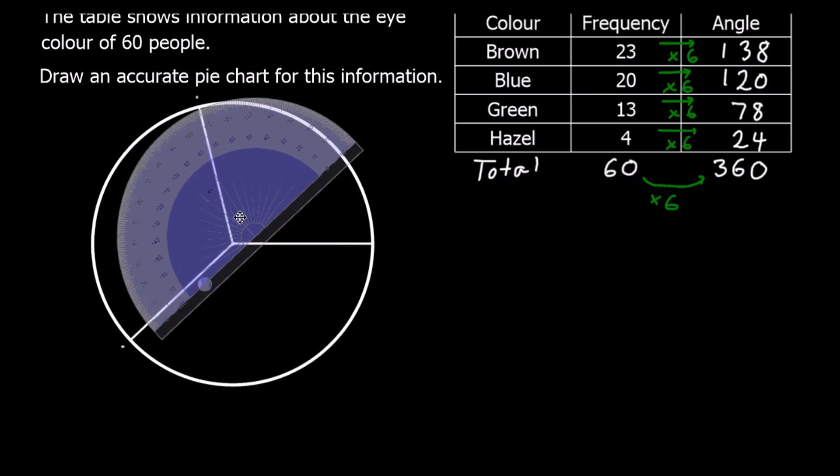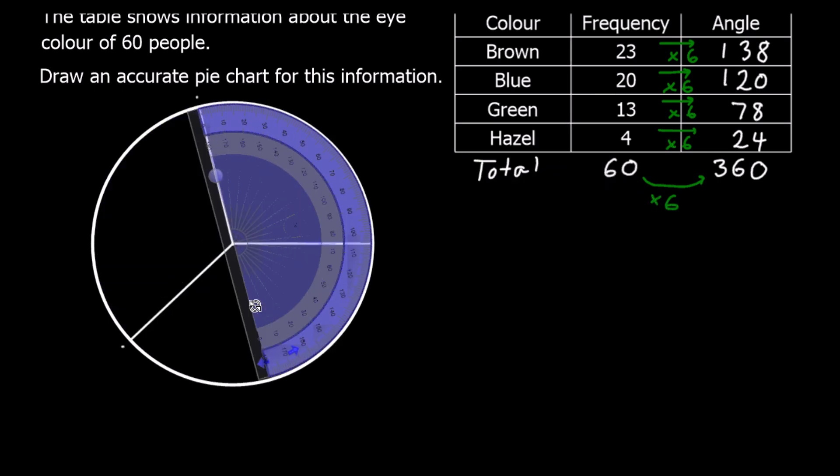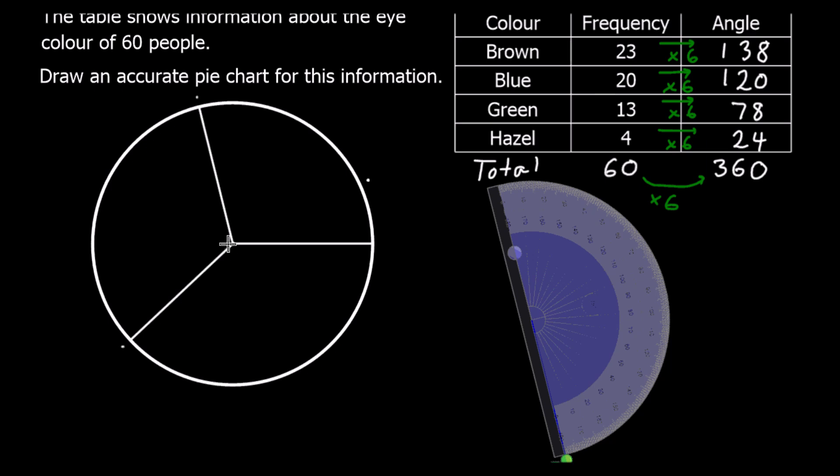78 degrees next. So 0 lined up with the line we've just drawn, the centre of the protractor in the centre of the circle. And we want 78 degrees. So 0 round to 78. Get the ruler and join from the centre of the circle to our point.